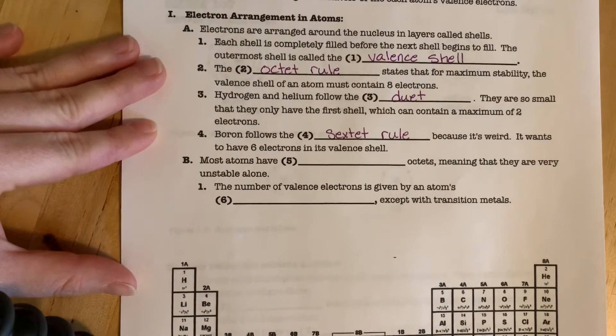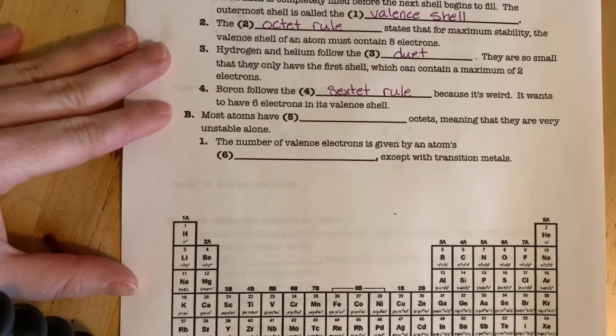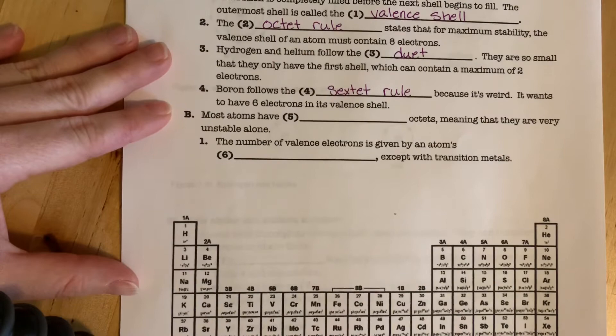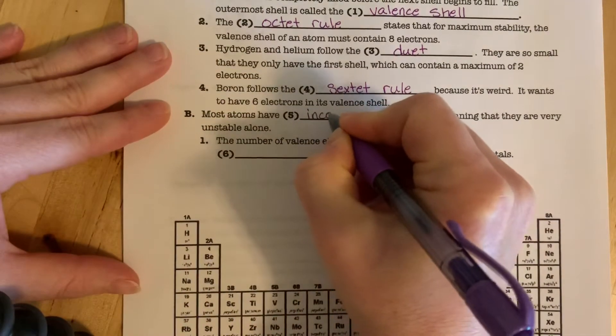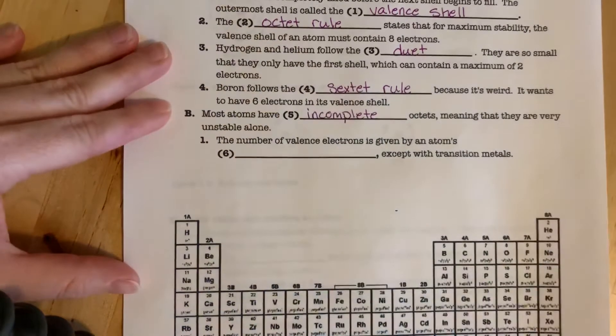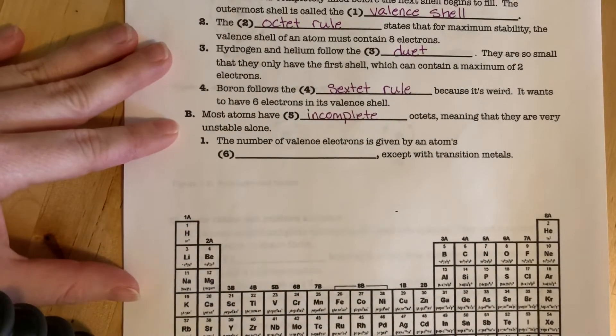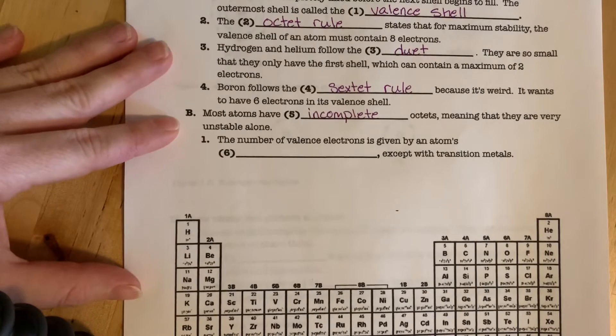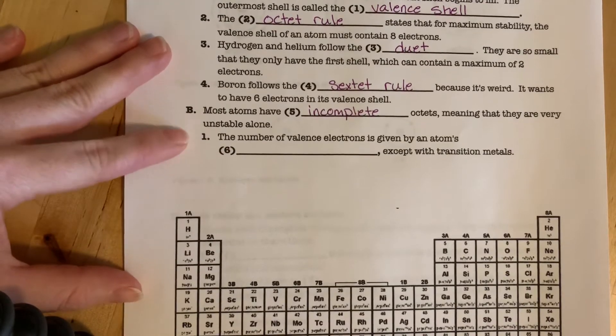I won't go into detail as to why. So most atoms, unfortunately, have incomplete valence shells. So they're unstable on their own. This is why they bond. They can't exist on their own.